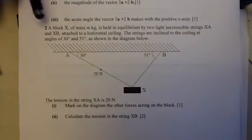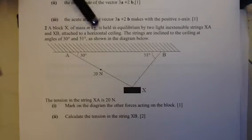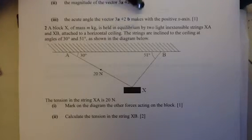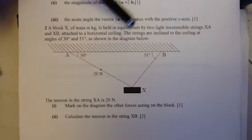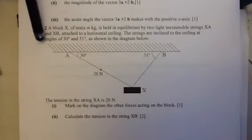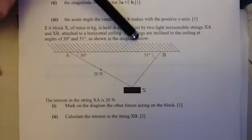Okay, so this question. A block X of mass M kilograms held in equilibrium by two light and extensible strings XA and XB attached to a horizontal ceiling. The strings are inclined to the ceiling at angles of 30 and 51, shown in the diagram below.